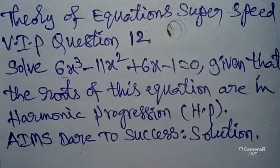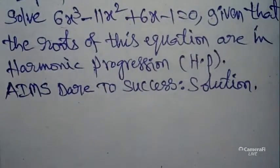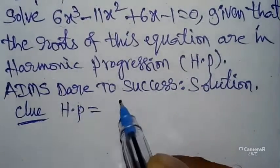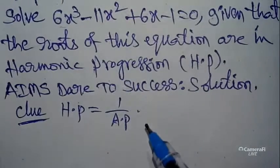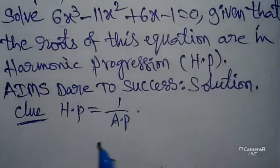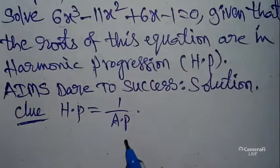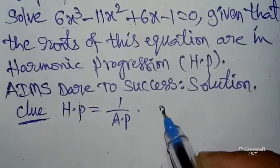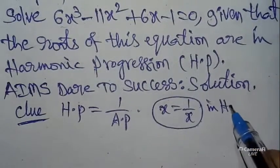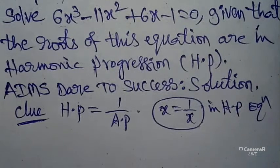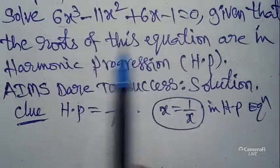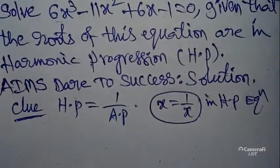Now I want to start. Here is my clue: Harmonic Progression is the reciprocal of Arithmetic Progression. Reciprocal means one over. So Harmonic Progression equals one by Arithmetic Progression — they are in reverse. Therefore, you can substitute x equals one by x in the Harmonic Progression equation. Substitute x equals one by x in the given equation. So let us start our journey.